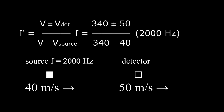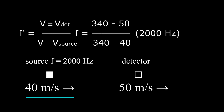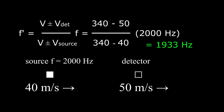In this fourth example we have the last possible combination of velocities, this time with the source chasing the detector. The detector is trying to move away, decreasing f prime, so we want to make the ratio smaller by choosing the minus sign in the numerator. The source is trying to move toward the detector, trying to increase the ratio and the detected frequency f prime, so we choose the minus sign in the denominator. The calculation gives 1933 hertz.